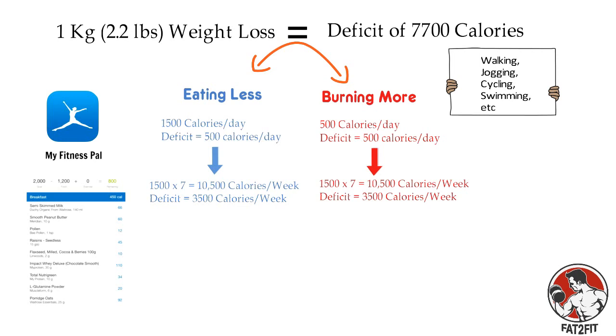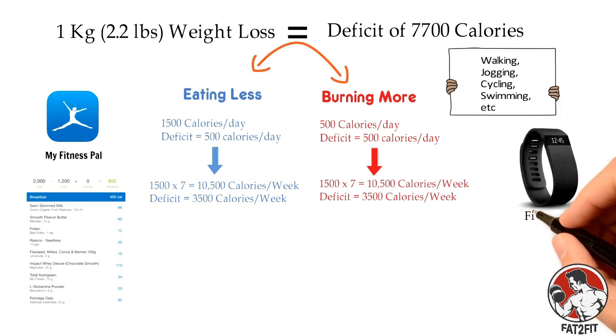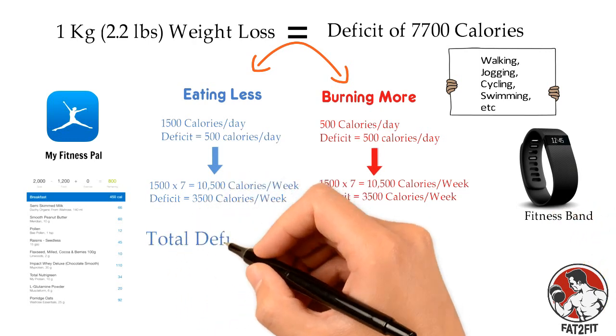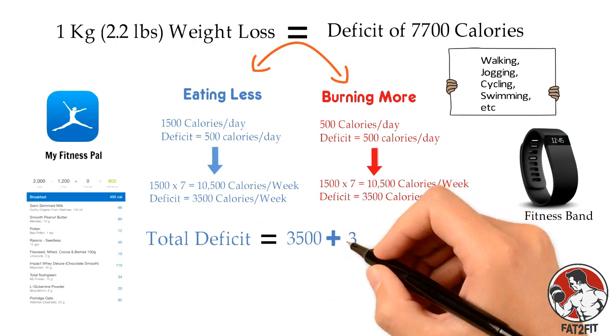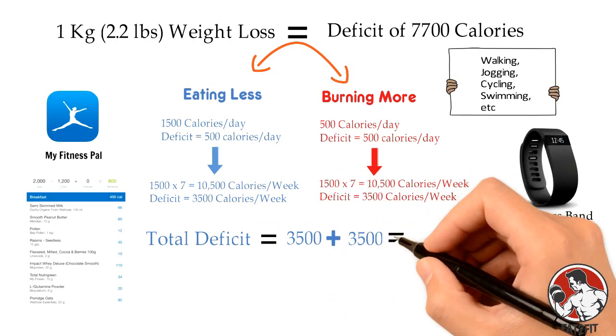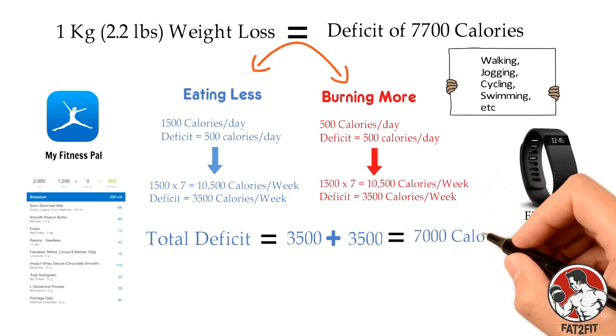Calorie expenditure can be tracked by various Android or iOS applications and fitness bands like those by Fitbit. So, the deficit from less food consumption is around 3500 calories, and the deficit from exercise is around 3500 calories, which adds up to 7000 calories.